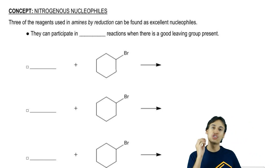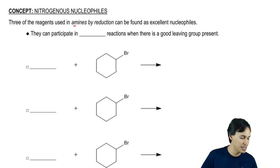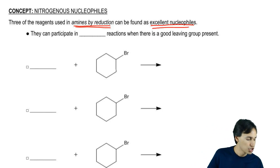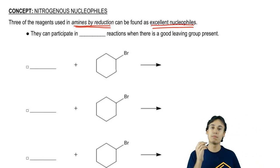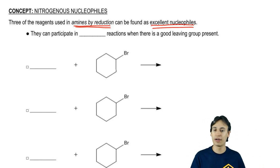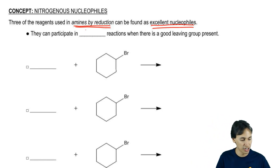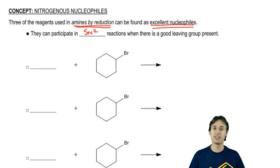Three of the reagents that were the starting compounds in my amines by reduction video can be found as excellent nucleophiles. It turns out that some of the ways that we can make those oxidized nitrogen compounds is to use nitrogen as a nucleophile first in an SN2 reaction. They're going to participate in SN2 reactions because it works if there's a good leaving group present.